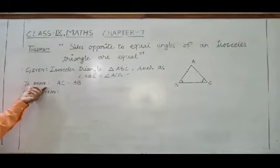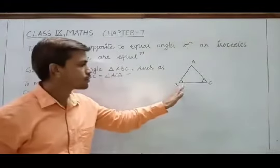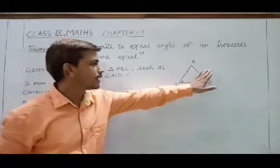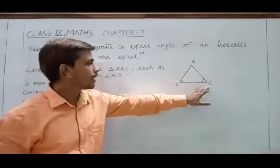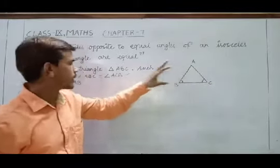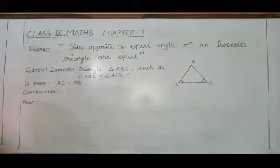We have to prove that the sides opposite to these equal angles are equal — that is, AC (opposite to angle ABC) and AB (opposite to angle ACB) are equal.